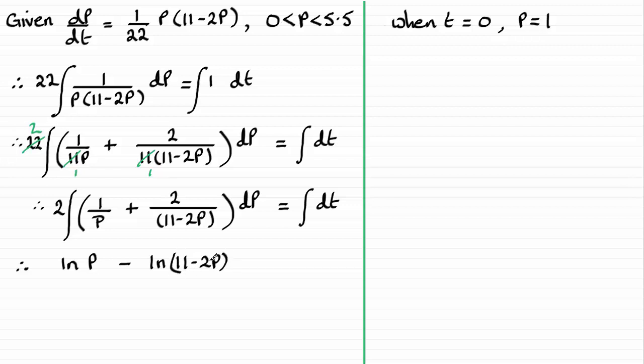And then we've got that 2 that's on the outside here. So we could multiply each of these terms by the 2. So we get 2 natural log of p minus 2 times the natural log of 11 minus 2p.